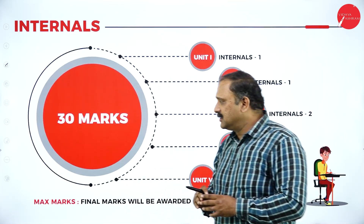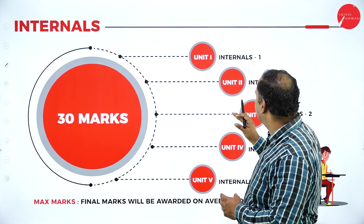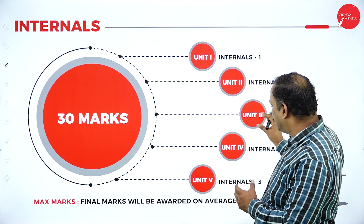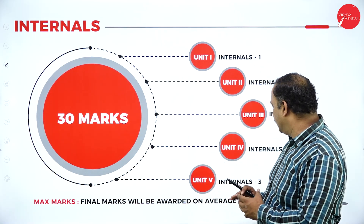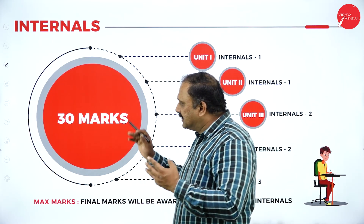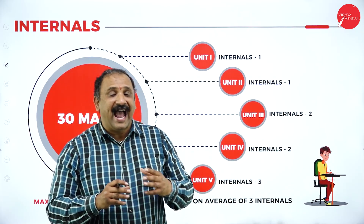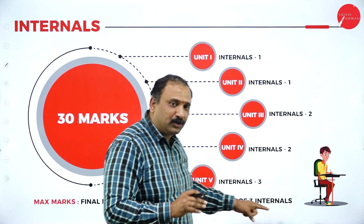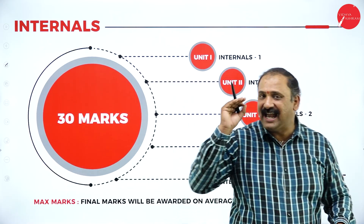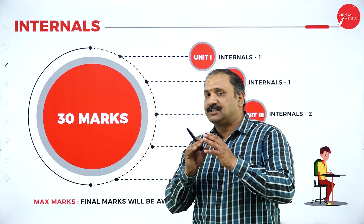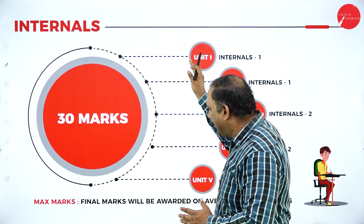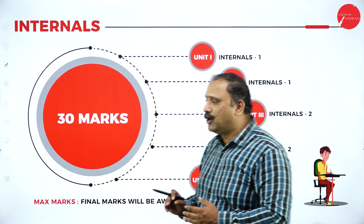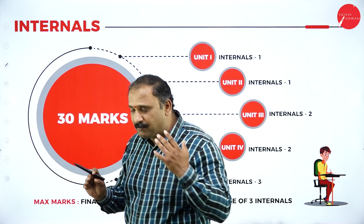Moving on to internals: units 1 and 2 form the first internal, unit 3 forms the second, and units 4 and 5 form the third — totaling three internals. The total marks are 30 and the average of all three internals is taken, not the best of three. So A plus B plus C are added up to give your internal marks score.